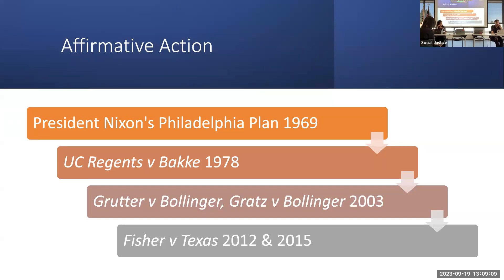Whether it was the house, the neighborhood, redlining, housing covenants — race is a precedent in your university application. This is challenged in 2003 in the University of Michigan cases, Grutter and Gratz. In these two cases, a very slim conservative majority on a 5-4 vote said there were some issues but upheld Bakke. This is challenged again in 2012 and 2015 in the Fisher v. University of Texas case.